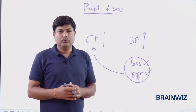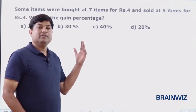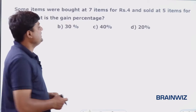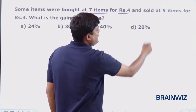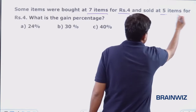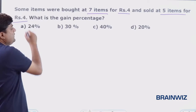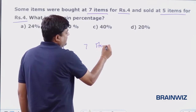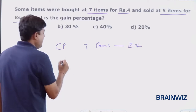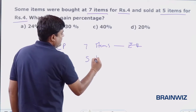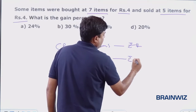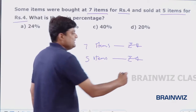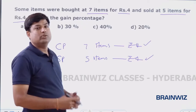Let me teach you the first question. Here on the screen: some items were bought at 7 items for rupees 4 and sold at the rate of 5 items for rupees 4. So here, cost price is 7 items for rupees 4 and selling price is 5 items for rupees 4. Now, we might be thinking that cost price is 4 and selling price is 4, so there is no profit, no loss.